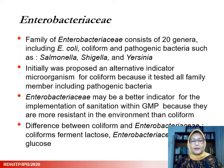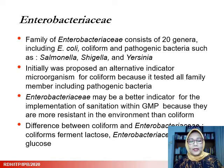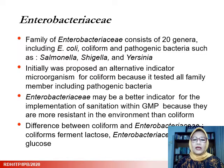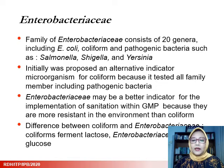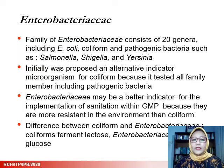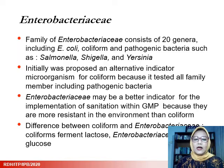During the development of indicator microorganisms, people also began using a larger group of bacteria: Enterobacteriaceae. Enterobacteriaceae is a family consisting of 20 genera, including E. coli, coliform, as well as pathogenic bacteria such as Salmonella, Shigella, and Yersinia. This group was initially proposed as an alternative indicator for coliform because it covers all family members, including pathogenic bacteria. It is also thought to be a better indicator for sanitation implementation, being more resistant in the environment than coliform. Enterobacteriaceae differs from coliform in carbohydrate use: coliform ferments lactose, while Enterobacteriaceae ferments glucose.